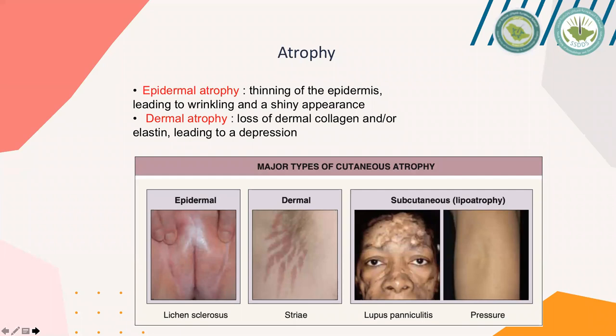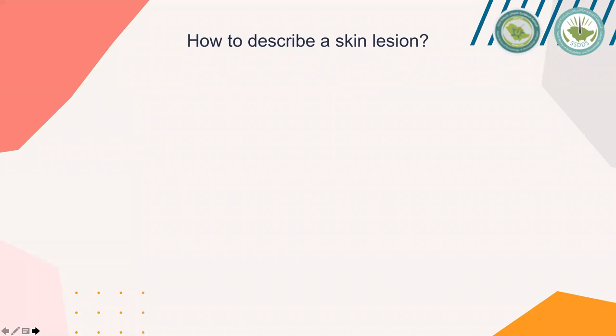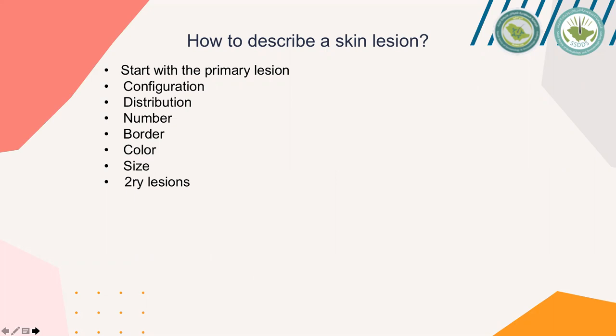Now we move to the second objective: how to describe a skin lesion. We start with the primary lesion — macule, patch, papule, nodule, wheal, and so on. We then describe configuration and distribution. You should mention the number — single, two, three, or multiple if uncountable. Border can be significant, as in differentiating erysipelas from cellulitis. You should mention color, size in centimeters, and any secondary lesions such as scale, crust, excoriation, lichenification, or atrophy.